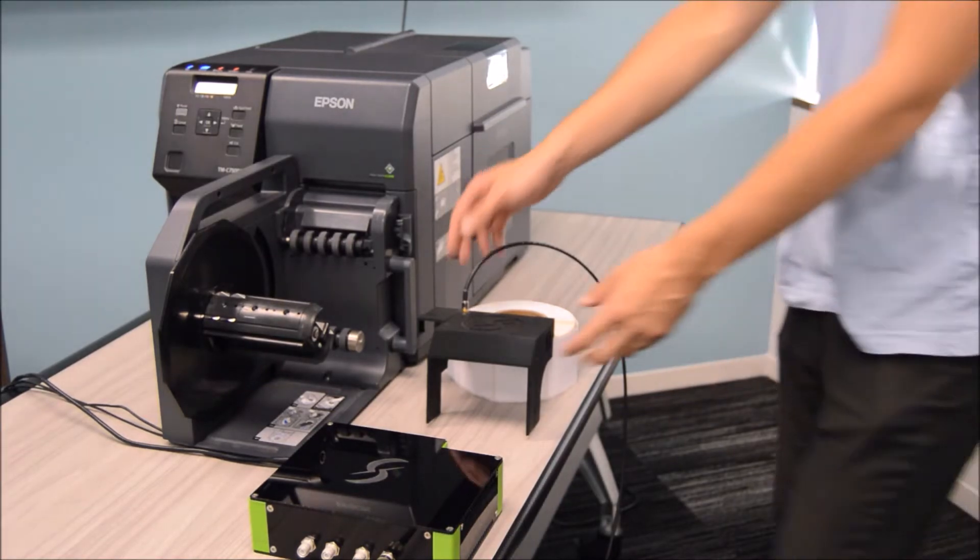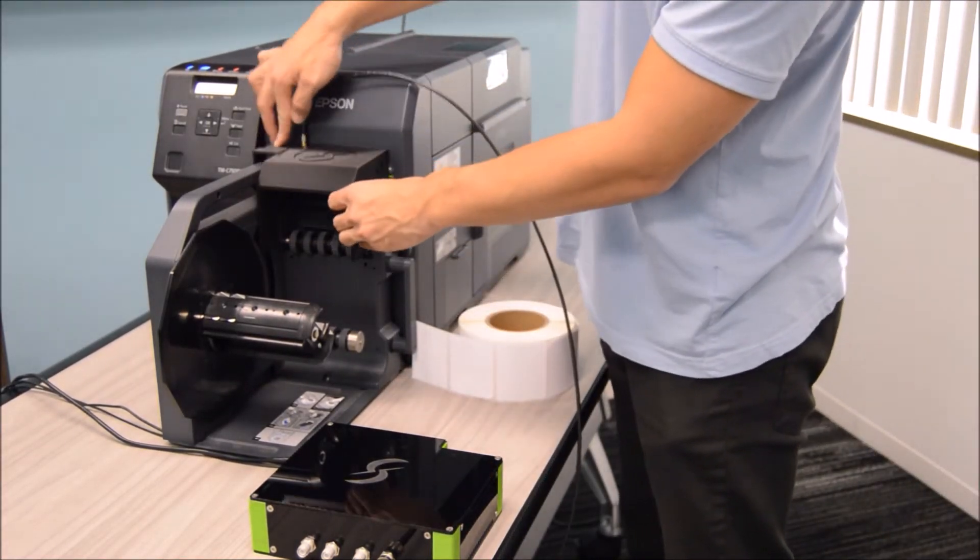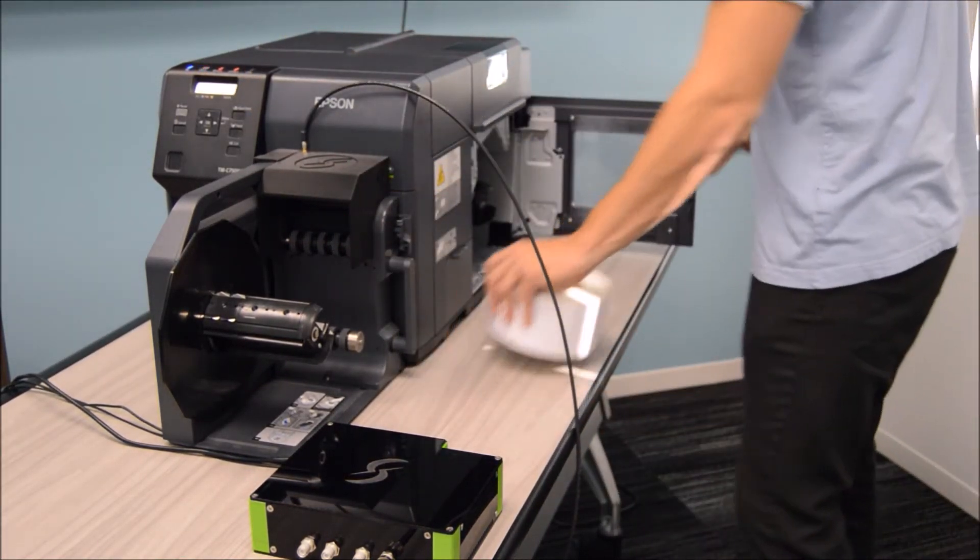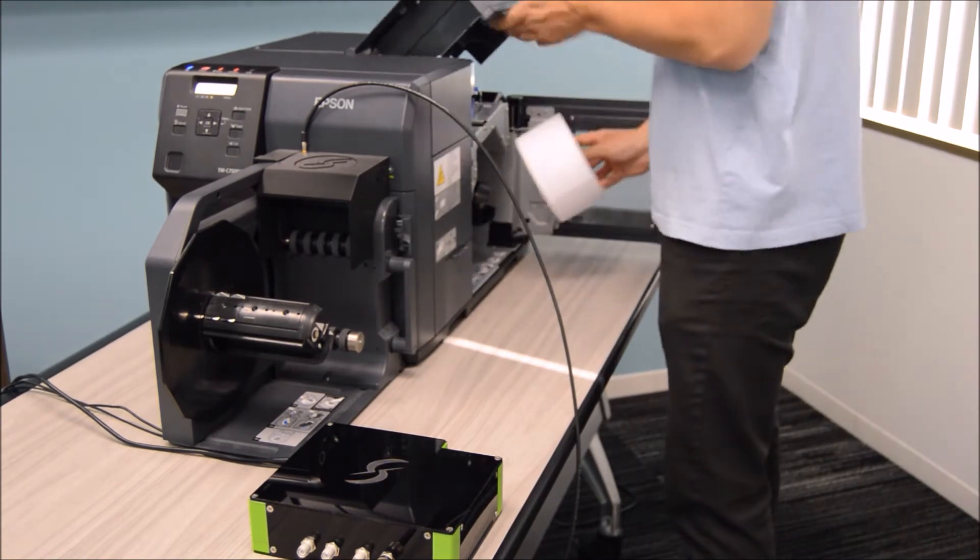Our kit installs in seconds and immediately allows you to print and encode full-color UHF RFID labels at 12 inches per second.